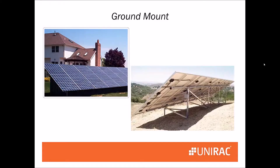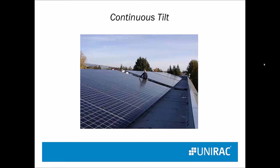A ground mount is exactly that — attached into the ground, not onto a roof. Continuous tilt is where the modules are in one plane. With our racking, our longest rail is 20 feet, so if this were more than 20 feet long it would actually have two separate supports but be built to look like one continuous tilt. The big advantage of continuous tilt is you don't have to be concerned about shadow spacing — they're not shading each other.